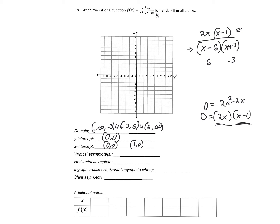Next we have vertical asymptotes. This is going to be where the bottom is undefined, so we'll have one at x equals 6 and one at x equals negative 3. If I draw those on the graph, here is the one for negative 3 — I'll make a line there, that's one asymptote — and then we have another one at 6. And while we're at it, let's put our x-intercepts on there as well.